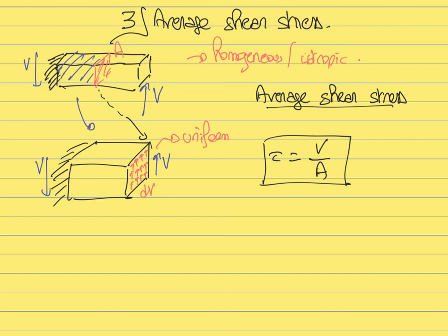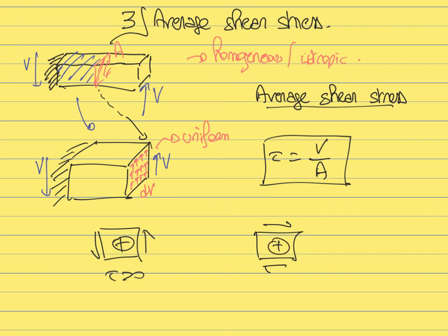The sign convention for shear stress is that a positive shear stress is defined when the force is applied at the top and bottom in a specific direction, while a negative shear stress has the forces applied in the opposite direction.